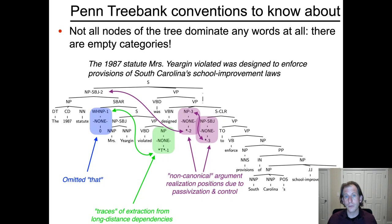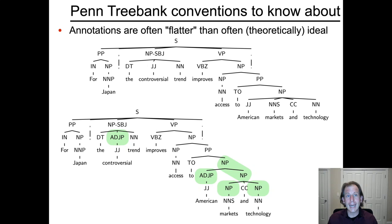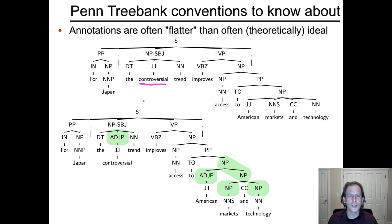Another Penn Treebank convention is about how much bracketing and what non-terminal or phrasal labels are used. Annotations are often 'flatter' than what one might find theoretically ideal. For example, in the sentence 'For Japan, the controversial trend improves access to American markets and technologies,' we might want to say that 'controversial' heads a full adjective phrase, like 'the very controversial,' so there should be a phrase node there. The Penn Treebank doesn't consistently bother to do this.